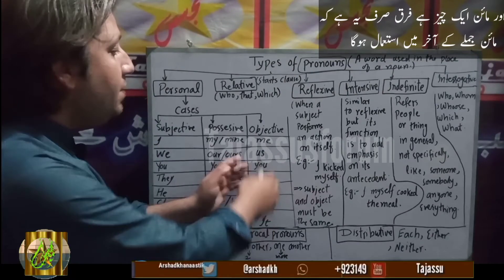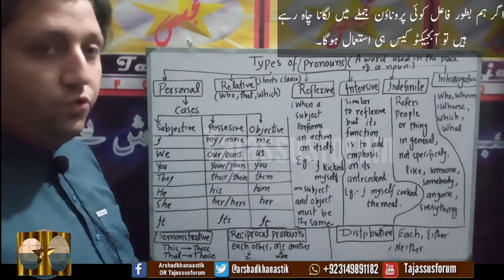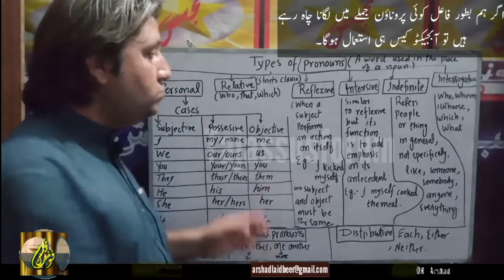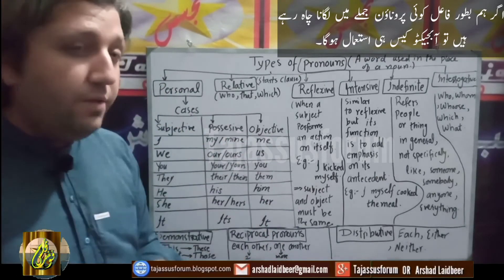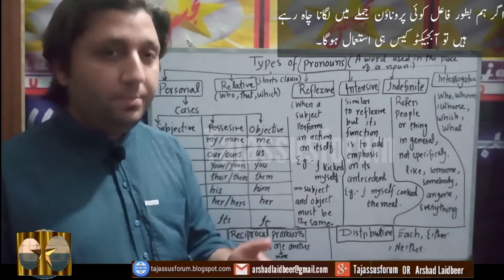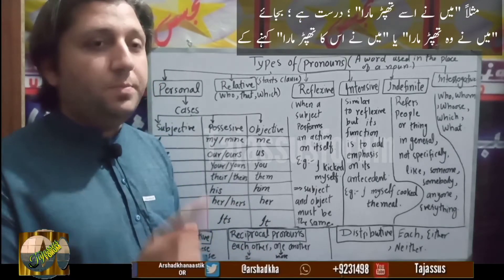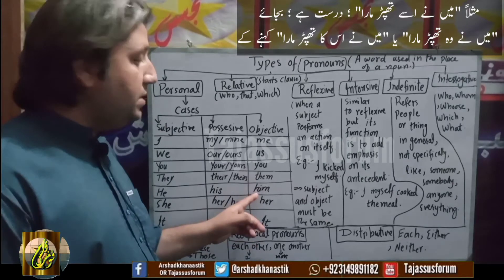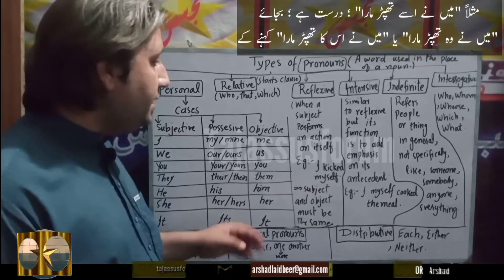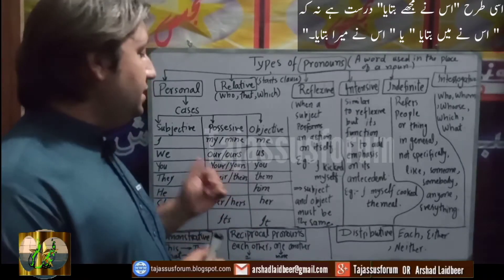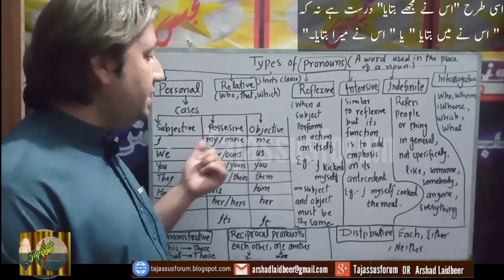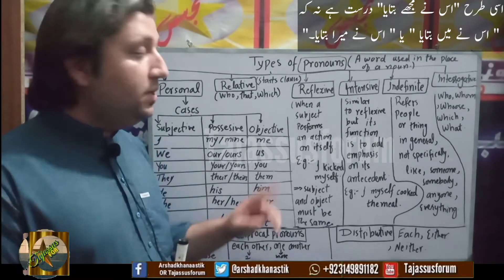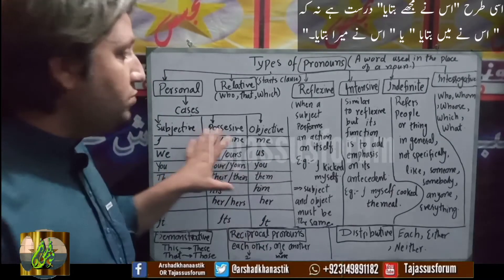The third column is named the objective case. The objective case is used whenever you are going to use a pronoun as an object in a sentence. You can't use the subjective or possessive cases in this position. For example, if I say 'I slapped him', I can't say 'I slapped he' or 'I slapped his' — that would be wrong. Instead I should use 'him'. Consider another sentence: 'he told me'. I can't say 'he told I' or 'he told my'. Both would be wrong. The only correct sentence is 'he told me'. So I hope these things are now clear to you.